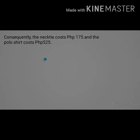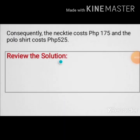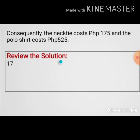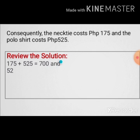To verify the answer, let's review the solution. We see that 175, which is the cost of the necktie, plus 525, which is the cost of the polo shirt, equals 700. So it is correct. And 525 minus 175 equals 350. So I conclude that my answer is really correct.